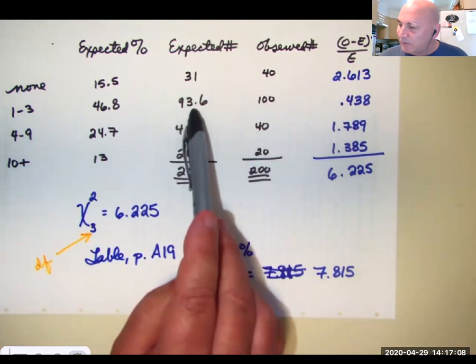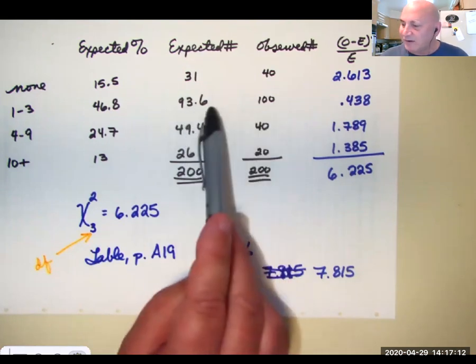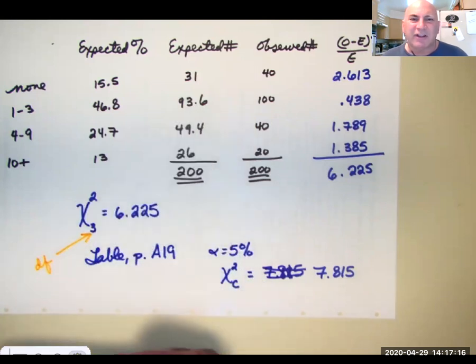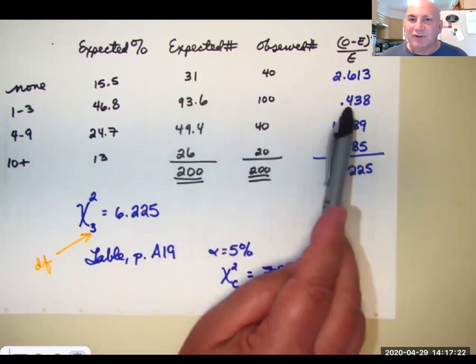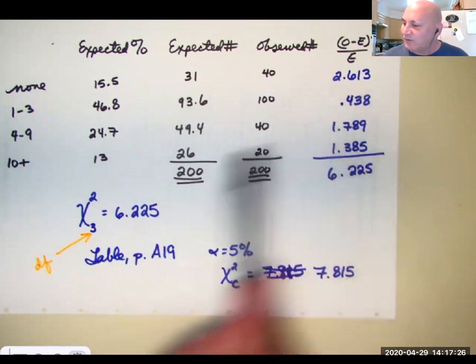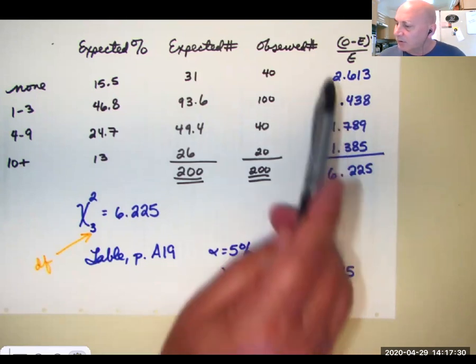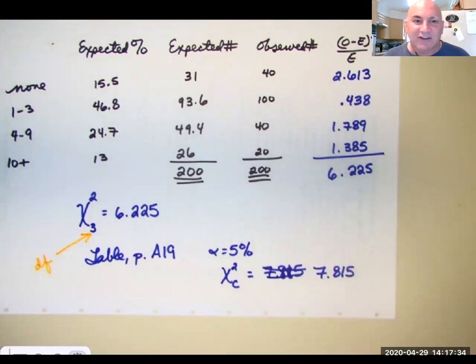100 minus 93.6 is 6.4. Square that. You're going to get, oh, I don't know, something close to 40. And then divide that by 93.6. There's your chi-squared component. Do that for each of your categories and add them up. And our chi-squared statistic is 6.225.